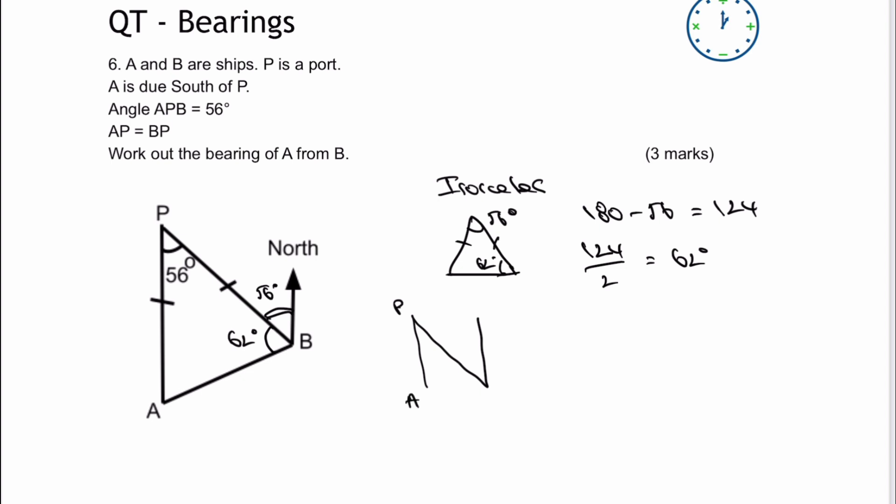Because P, or A rather, is due south, and we've got B and the north, because it's due south and north, it basically means that these two lines must be parallel to each other.